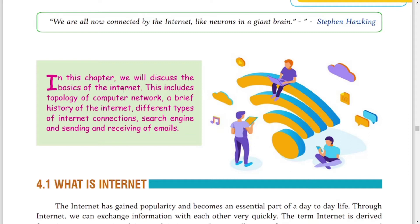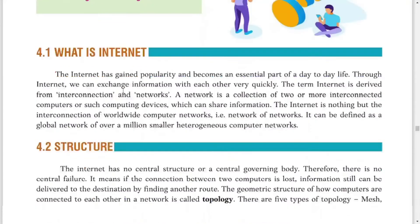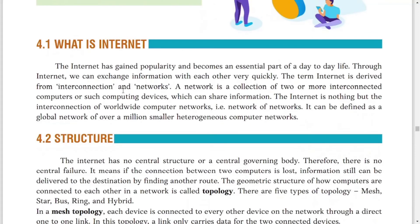In this chapter we'll discuss the basics of the internet. It includes topology — topology means how we put the computer — a brief history of the internet, types of internet connection, search engines, and sending and receiving emails. First of all, what is internet? When we connect two or more computers together, the computers connect to a network, and when this type of network is again connected to a router or server, that is known as internet.